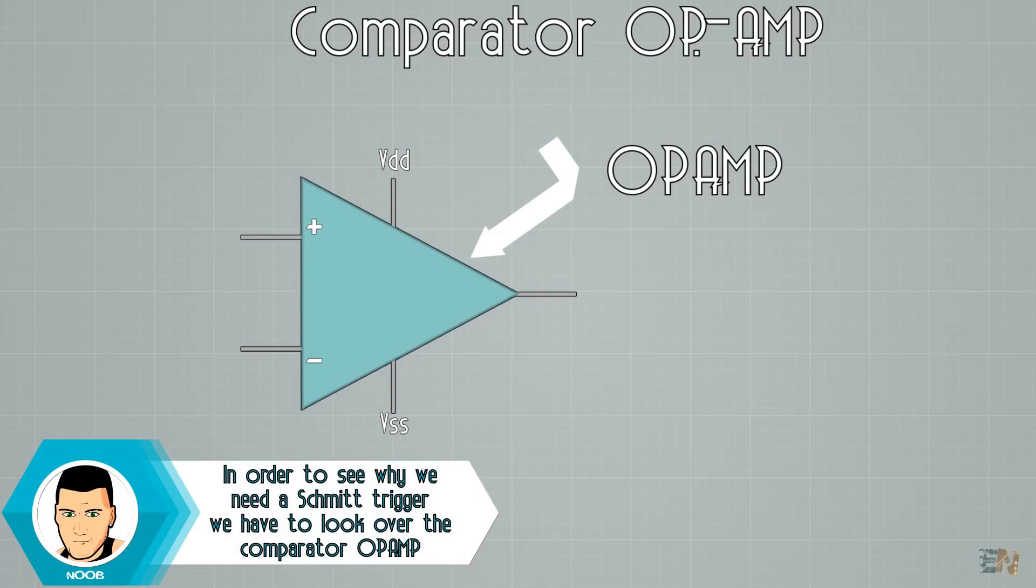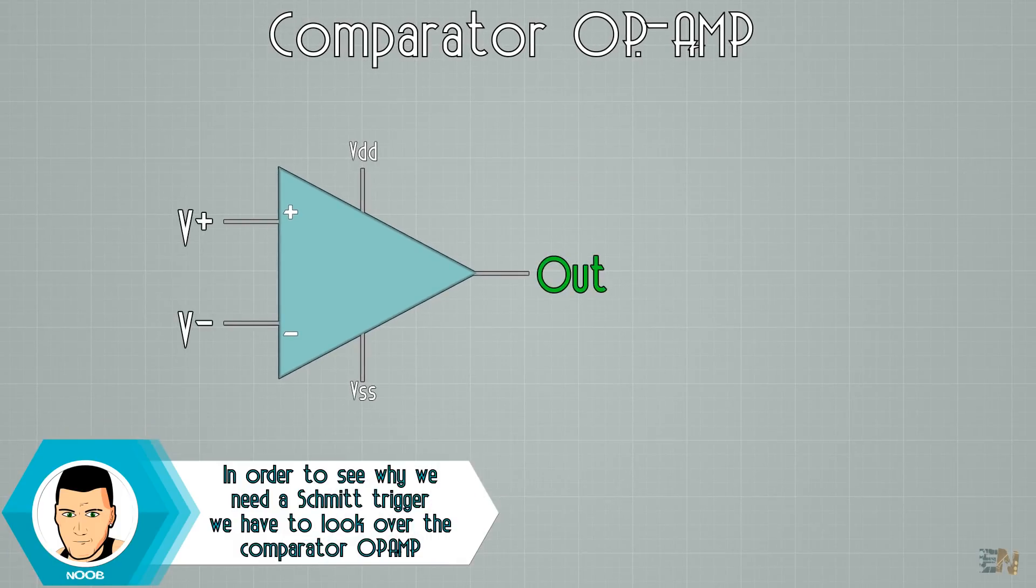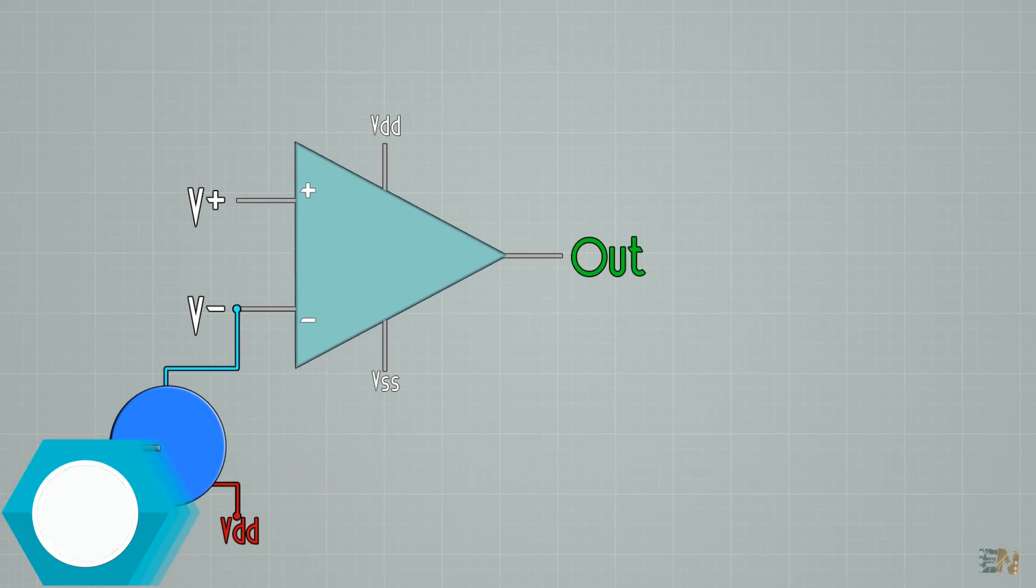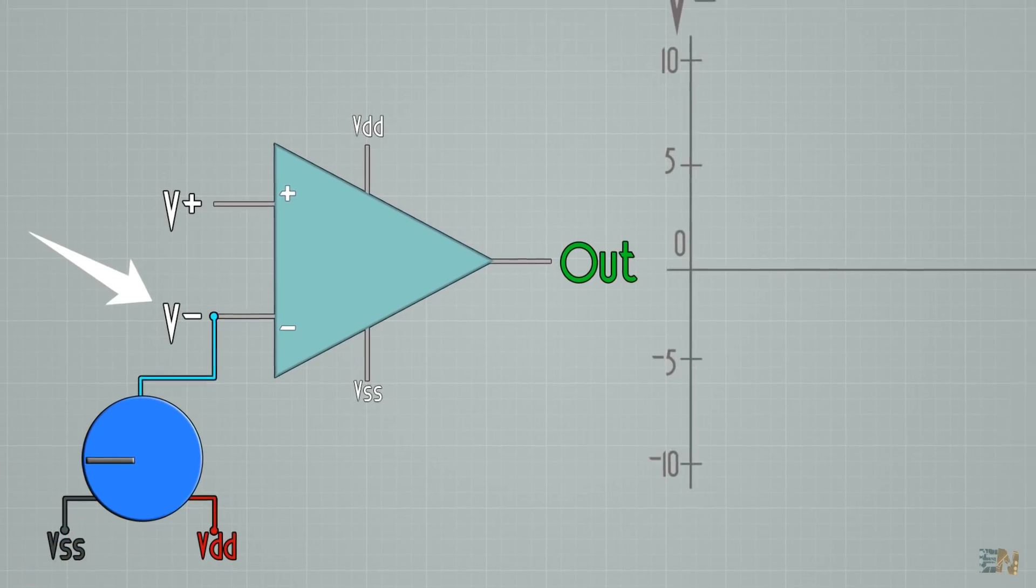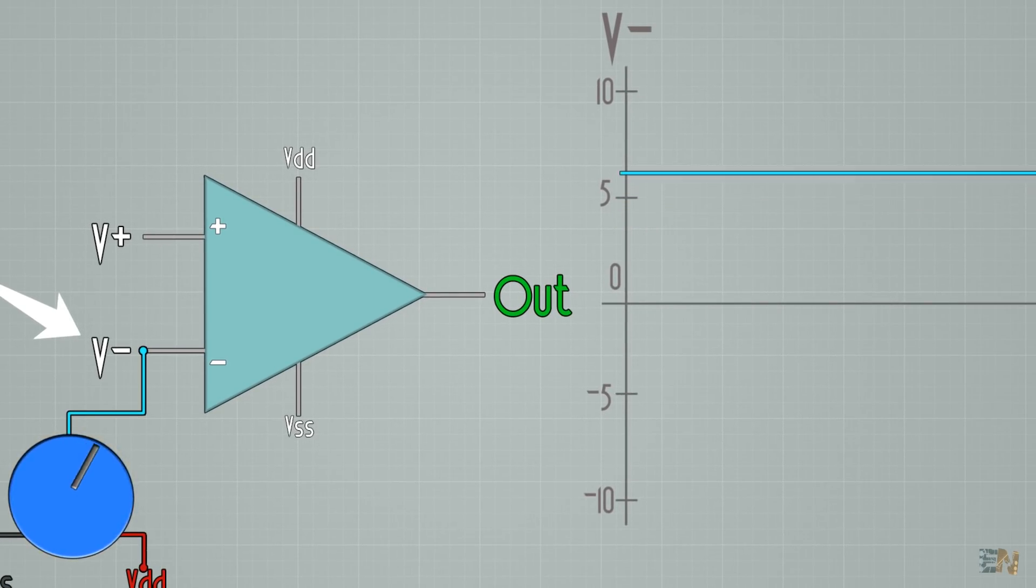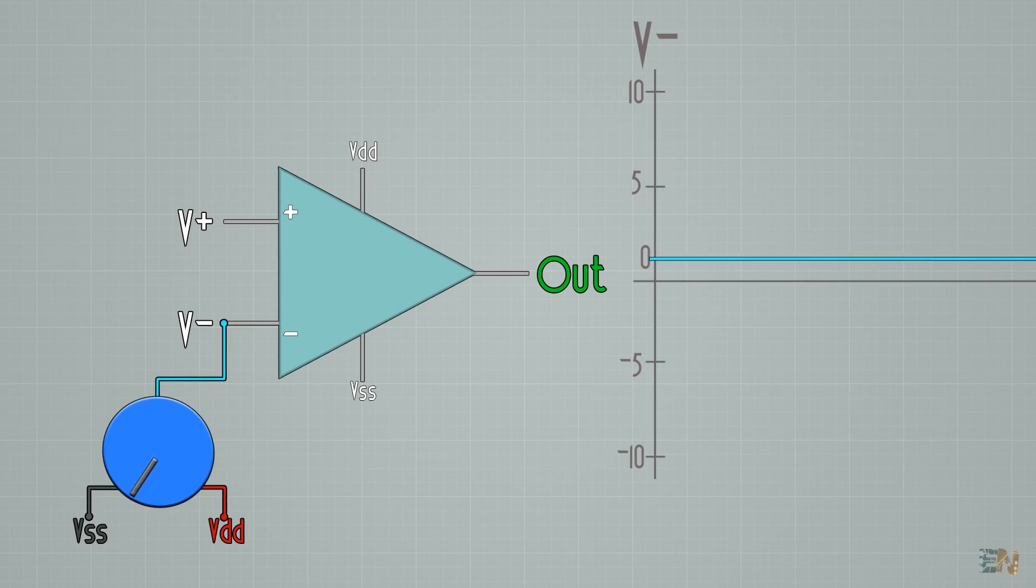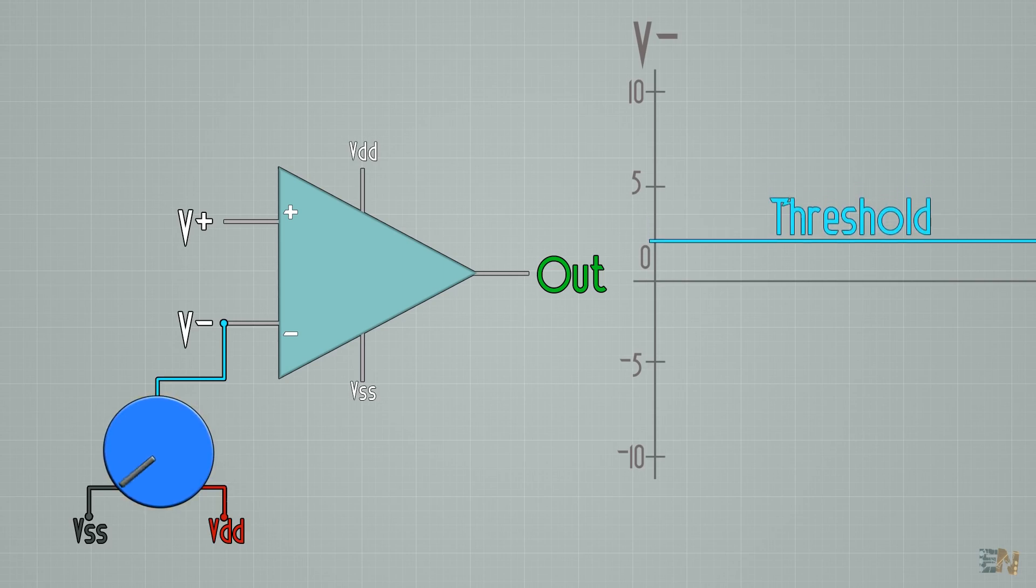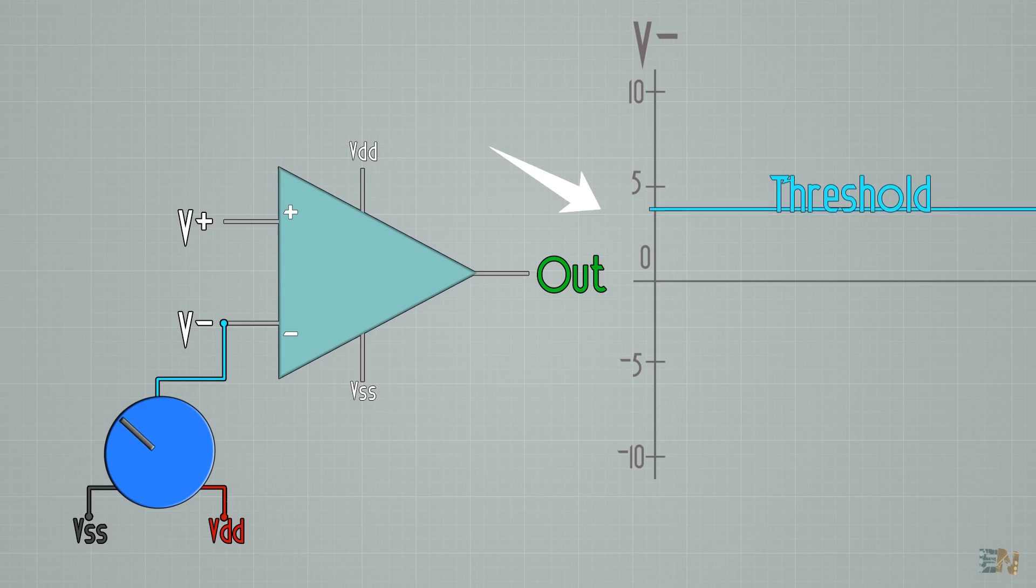If you remember, we have 2 inputs and 1 output. If I place a potentiometer at the negative input, we can change the threshold value for when the signal at the output will pass to high or to low. We can lower or increase this threshold. So, let's say that we place a threshold of 3 volts using the potentiometer.